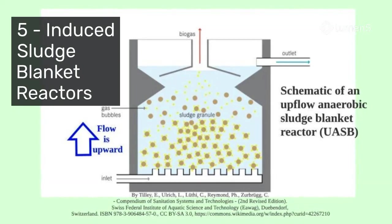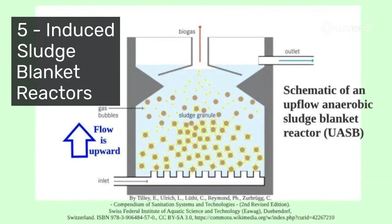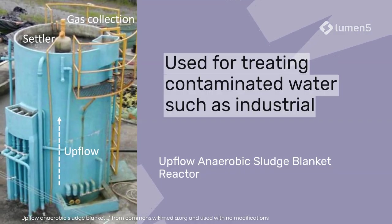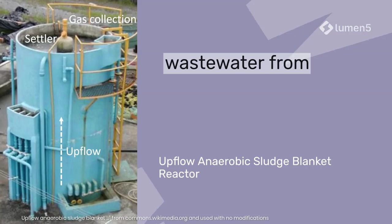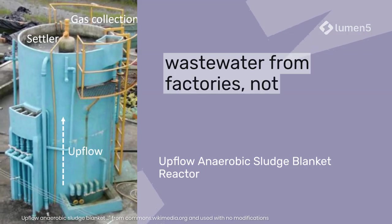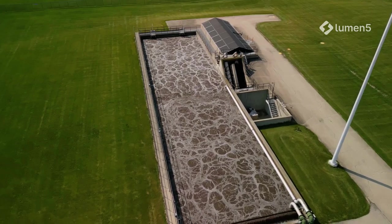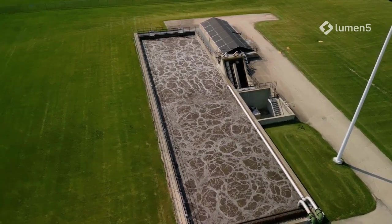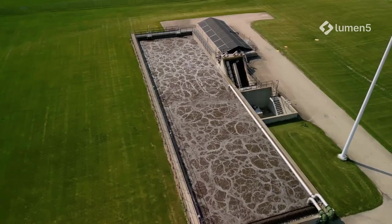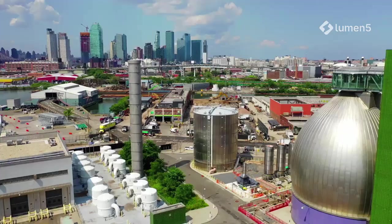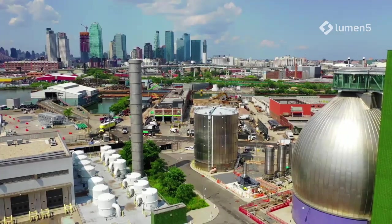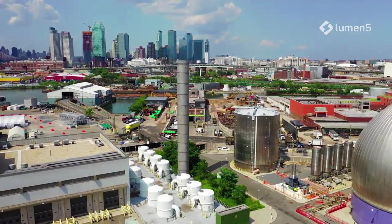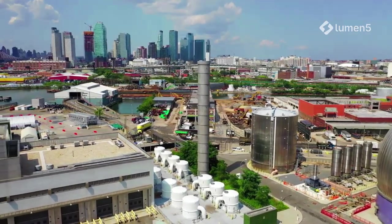Type 5: Induced blanket reactors. Used for treating contaminated water such as industrial wastewater from factories, not slurries. These need a bigger tank than the alternative aerobic process and have a higher initial cost. They are quite rare, but are used increasingly for their improved sustainability when compared with aerobic treatment.